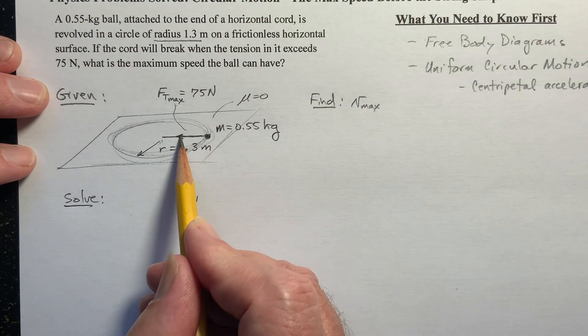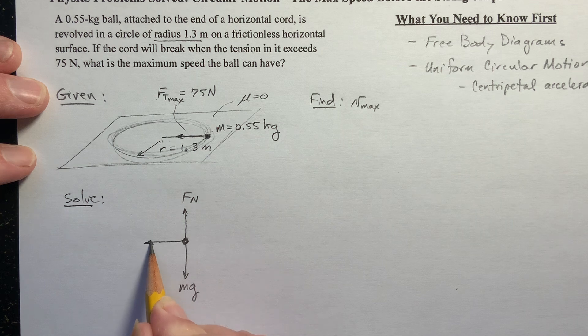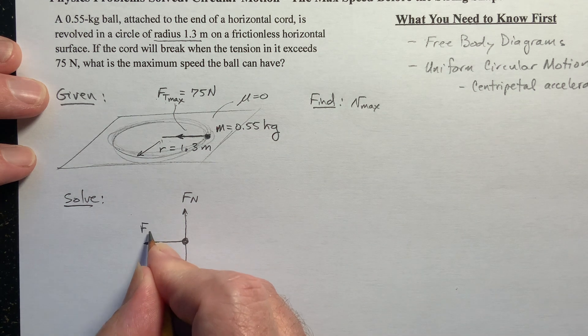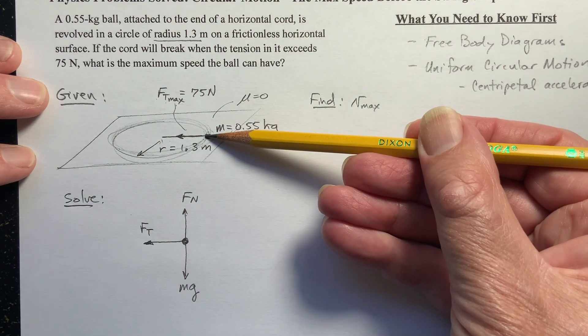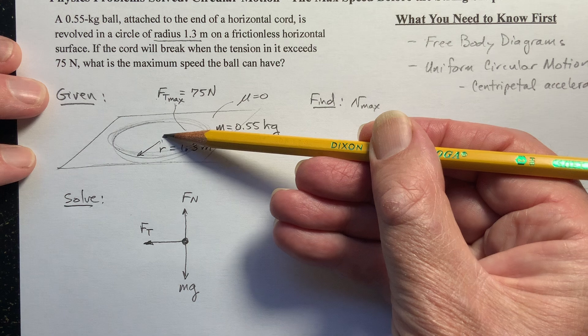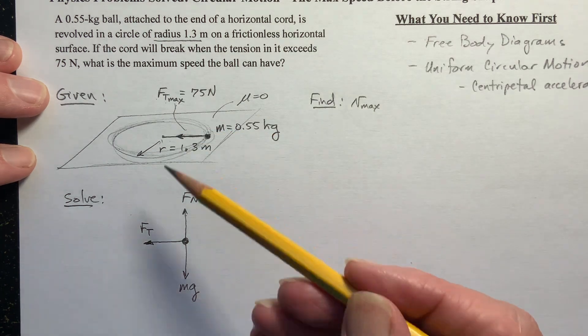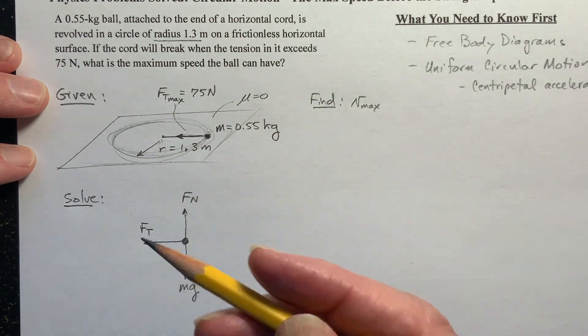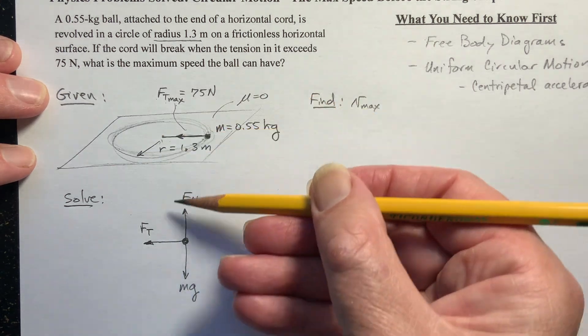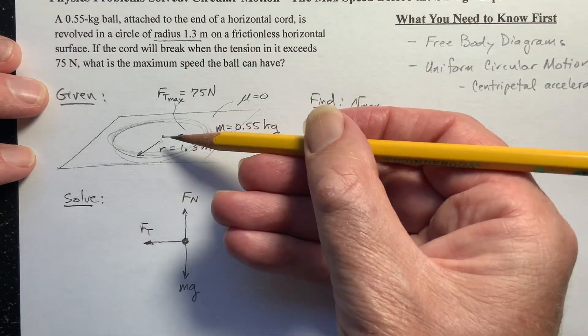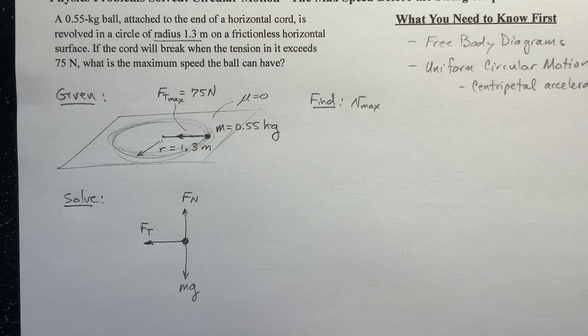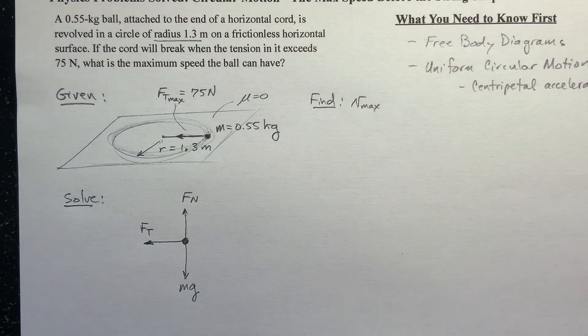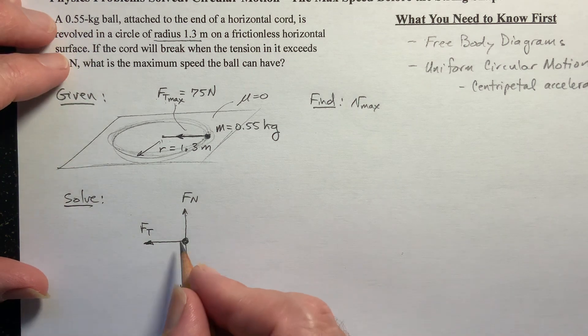But we do have this tension force. Here's the tension force. Now this tension force, where is it pointed? This tension force goes right through the center of the circle. And it's the only force pointed towards the center. So it's not only pointing towards the center, but it's the net force pointed towards the center. And the net force pointing towards the center of an object moving in a circle, we call the centripetal force. Centripetal means center seeking. That's what it's doing.